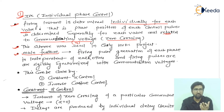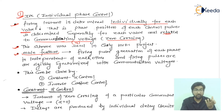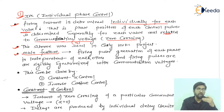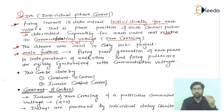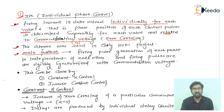If one thyristor is fired at, let's say, 10 degrees, then the next will be fired at 10 plus 60 degrees, because every time we have a 60-degree interval for firing another thyristor. In this way they are fired, but they are not actually depending on each other — they are independent of each other. The firing pulses are rigidly synchronized with the commutation voltage.